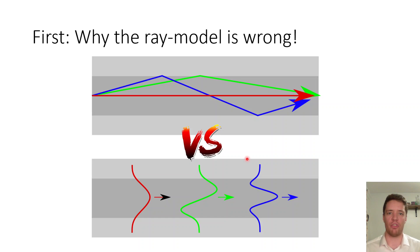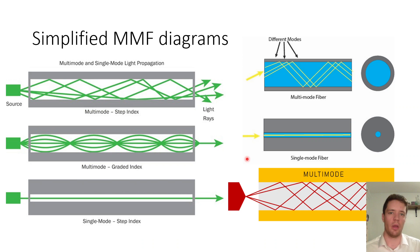First we should discuss why the often presented ray picture of the propagation of light inside waveguides is incorrect. If you google the word multimode fiber you'd likely see diagrams where light propagates like arrows bouncing around inside. In the case of a single mode fiber it's sometimes indicated that we have an arrow going straight through but for multimode fibers it sort of bounces around multiple times.